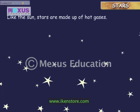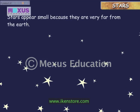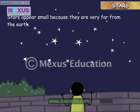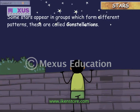Like the Sun, stars are made up of hot gases. They have their own light and give out light and heat. Stars appear small because they are very far from the Earth. Some stars appear in groups which form different patterns. These are called constellations.